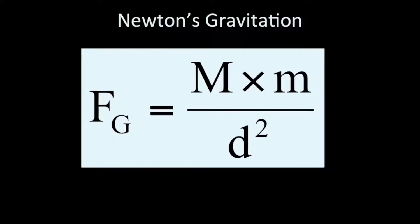Here is the form of gravity that Newton determined. The force due to gravity is equal to the mass of one object times the mass of another object, divided by the square of the distance between them. Here I've set the gravitational constant to be equal to one, just for simplicity's sake. Notice that you've got the product of the masses in the numerator and the square of the distance in the denominator. This will be important when we apply the force of gravity in several cases.